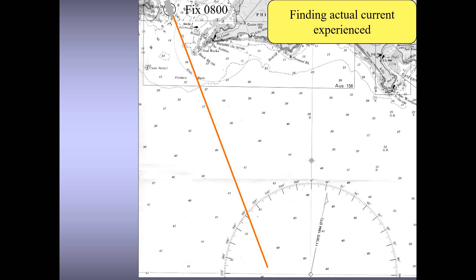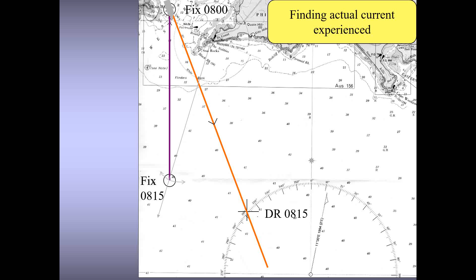That brings us to how we find the effect of current and the different terms associated with it. Let's say the vessel's fixed position at 0800 hours is known through a reliable position fixing method. The orange line represents the course steered — single arrows represent the course steered and distance traveled in the selected time. After 15 minutes the vessel is estimated to reach the DR position marked by the cross. But when you actually obtain another fix using a radar range and bearing at 0815, you observe the vessel's position is marked by the circle — not at the DR.